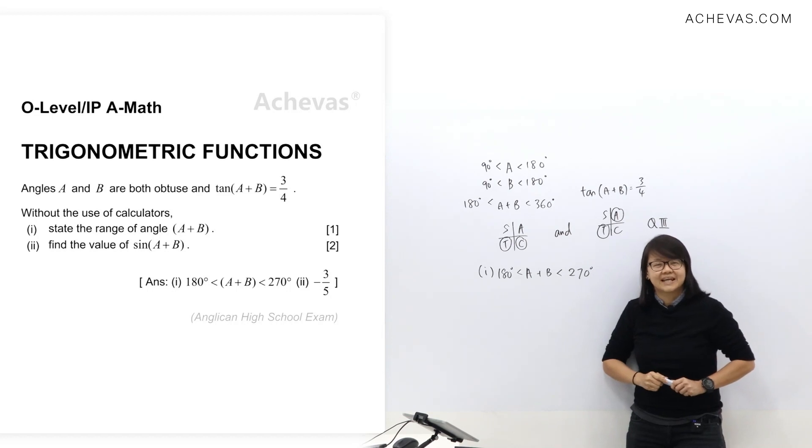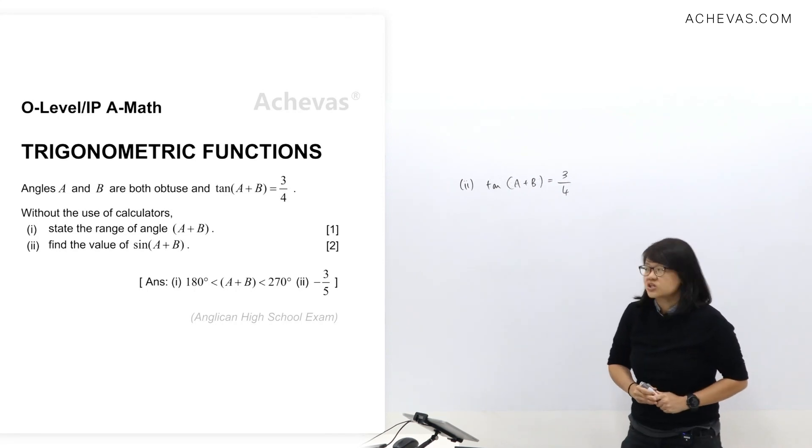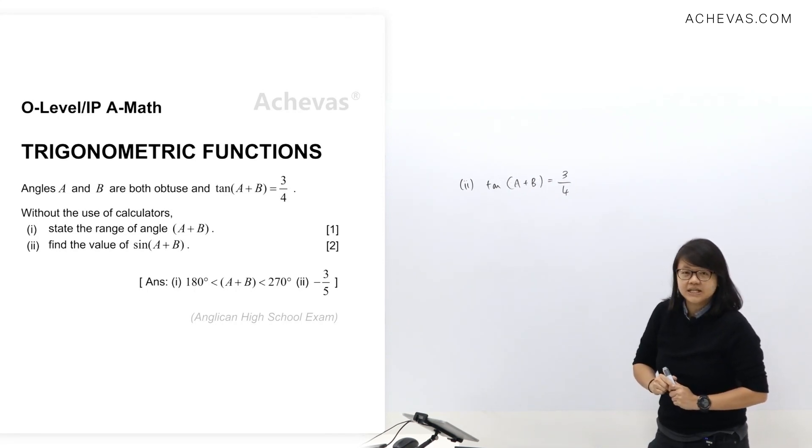So that's for part 1. Let me erase and let's discuss part 2. Now let's take a look at part 2 of the question. Find the value of sine A plus B.